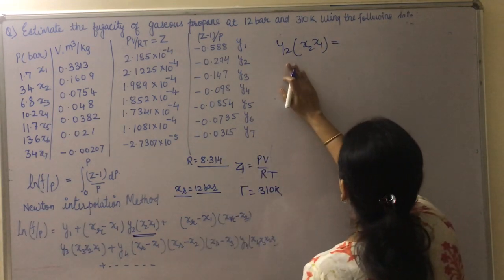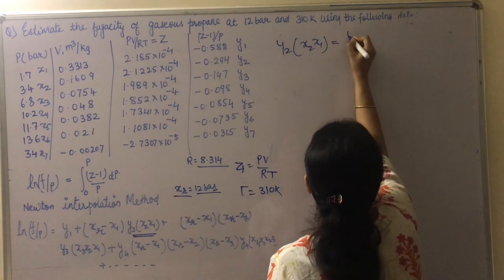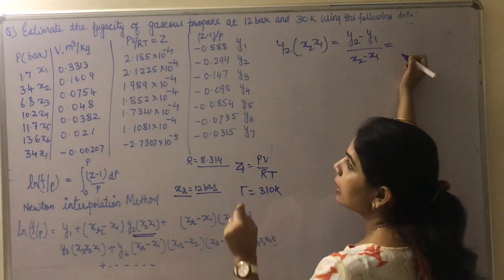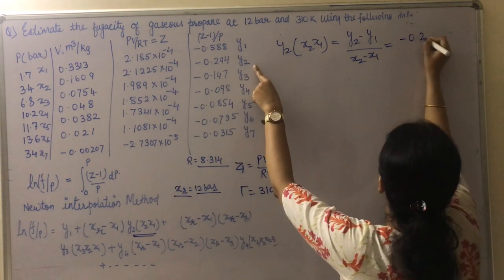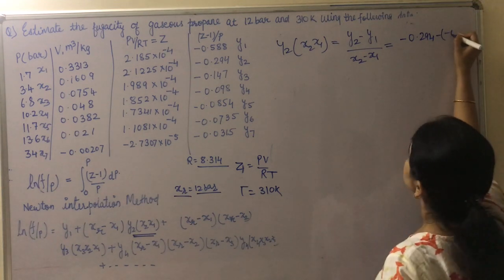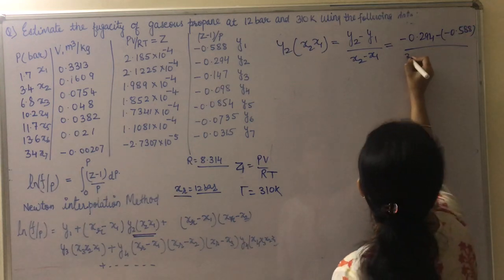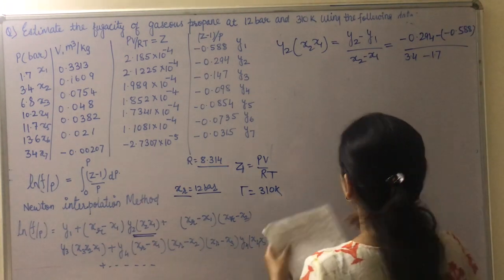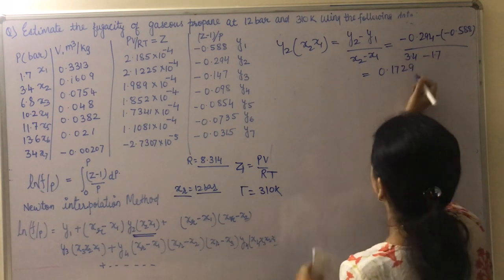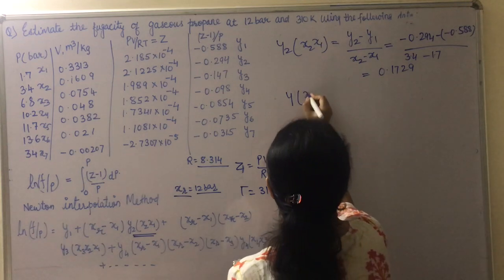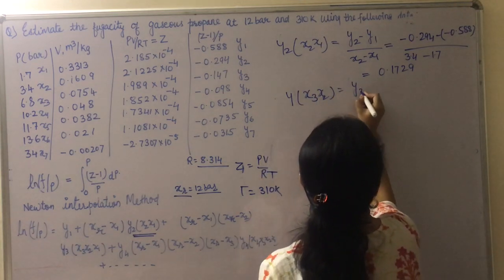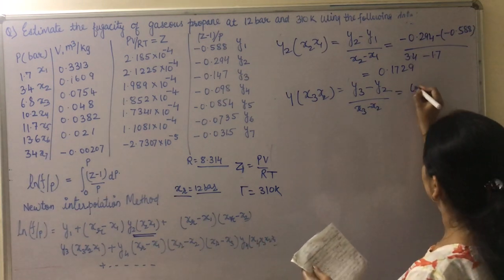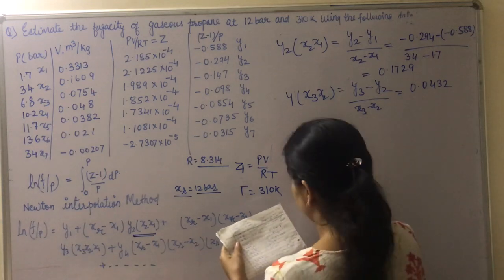To determine the first-order divided differences, the formula is (Y2 - Y1)/(X2 - X1). The value of Y2 is -0.294, Y1 is -0.588, X2 is 3.4, and X1 is 1.7. Solving this gives 0.1729. Similarly, the next value is (Y3 - Y2)/(X3 - X2), which gives 0.0432. I have already calculated these values.